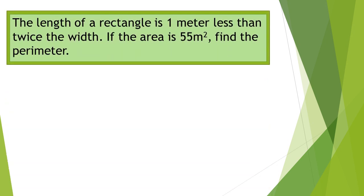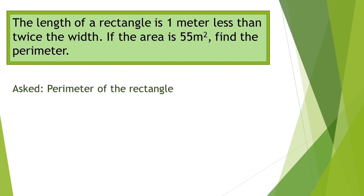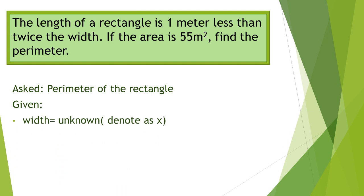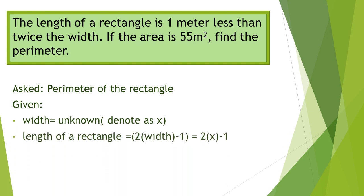For our next example: the length of a rectangle is 1 meter less than twice the width. If the area is 55 meters squared, find the perimeter. What is asked is the perimeter of the rectangle. The given are: the width, which is unknown, so we denote it as x; the length, which is 2 times the width minus 1, or 2x minus 1; and the area, which is 55 meters squared.